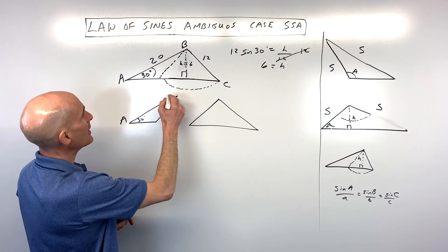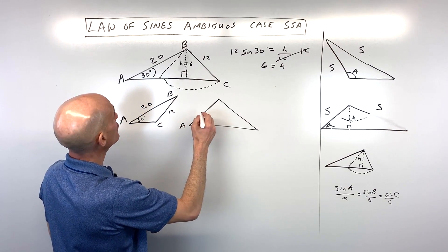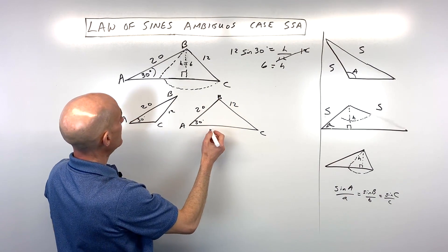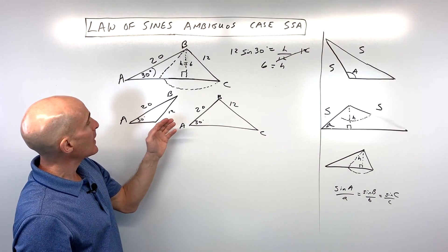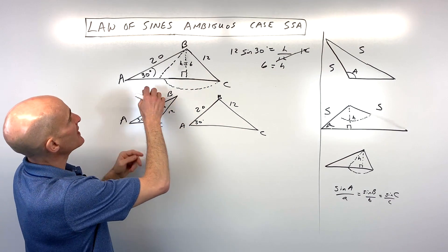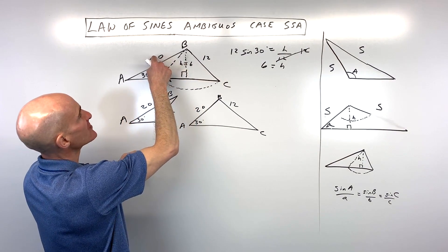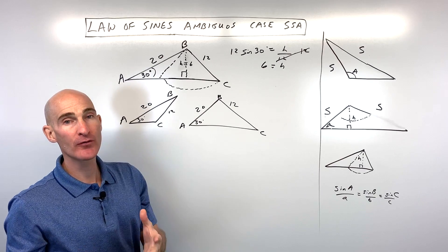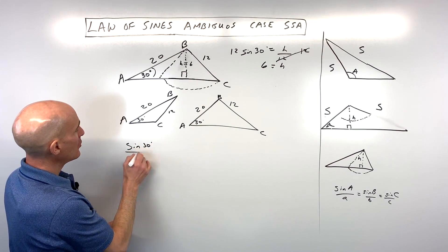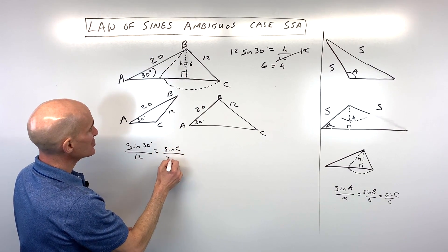So let's write down what we have. For both triangles: angle A = 30°, side adjacent = 20, side opposite = 12. We have angles A, B, and C to find, plus side B. We're going to start by solving for angle C using the Law of Sines: sine of angle over its opposite side forms a pair and a proportion. So we set up: sine of 30° over 12 equals sine of angle C over 20.